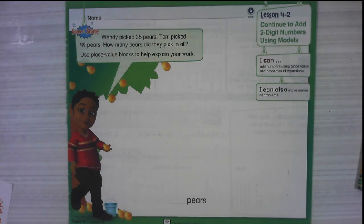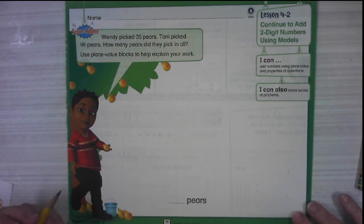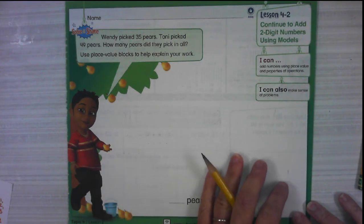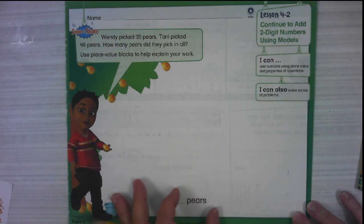We're going to continue to add two-digit numbers using models. Remember, models in math are pictures. We can use base 10 blocks to make a picture, we can use number lines. A model is some kind of picture.